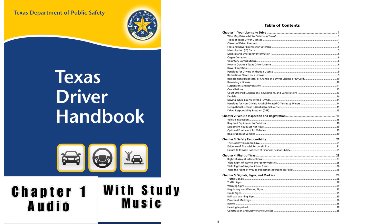Graduated Driver License: Teenagers and young adults have the highest crash rates of all drivers, and motor vehicle crashes are the leading cause of death for U.S. teens. Young drivers make up 6.5% of the driving population but are responsible for 13% of fatal crashes. The Graduated Driver License program eases teens into the driving experience by phasing in driving privileges and minimizing exposure to high-risk situations. The GDL program applies to driver license applicants under 18 years of age and has contributed to a decrease in fatal crashes in recent years.